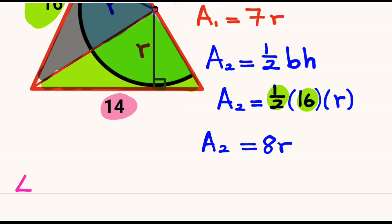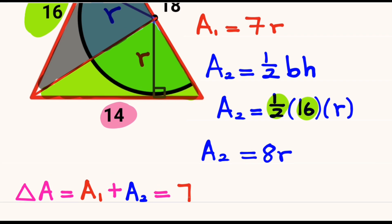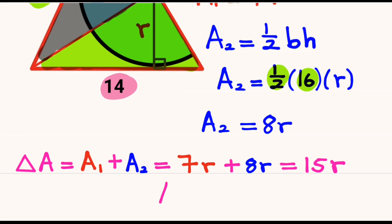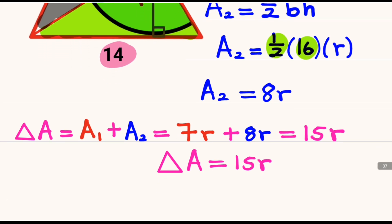The total area of the bigger original triangle will be equal to Area 1 plus Area 2, which is 7R plus 8R. So the total area of the original triangle will be equal to 15R, which is 15 times the radius of the semicircle.